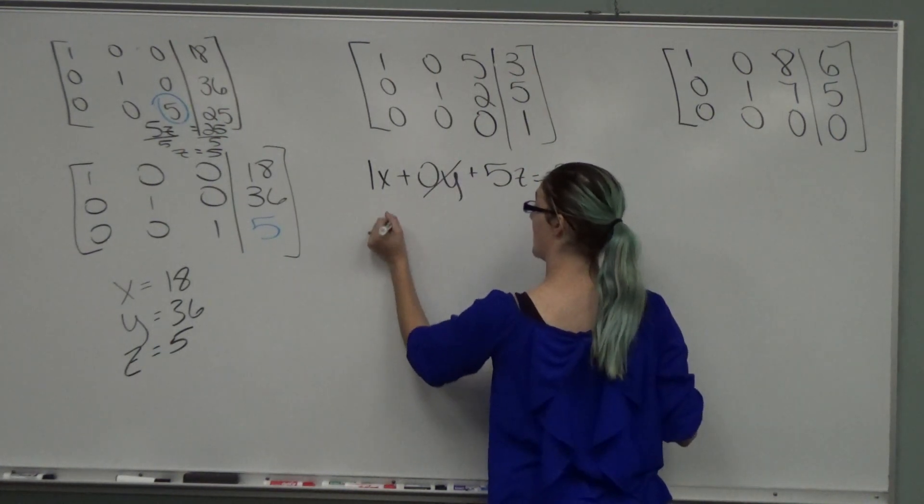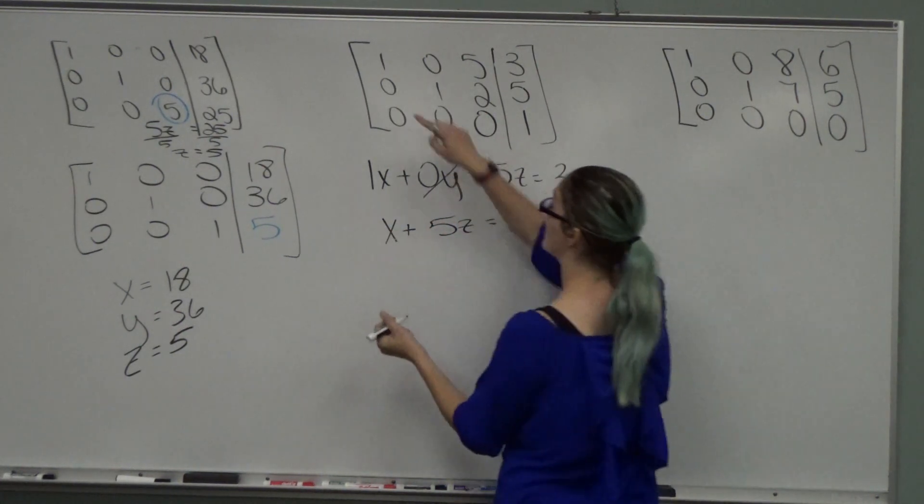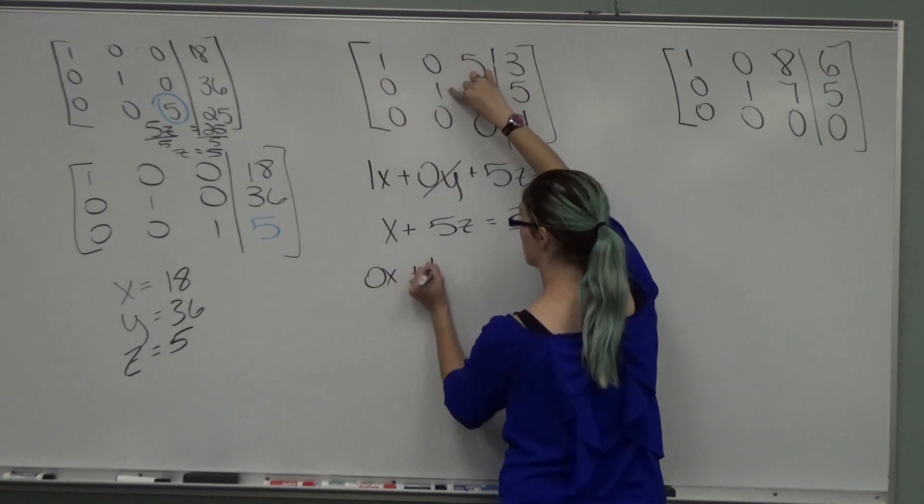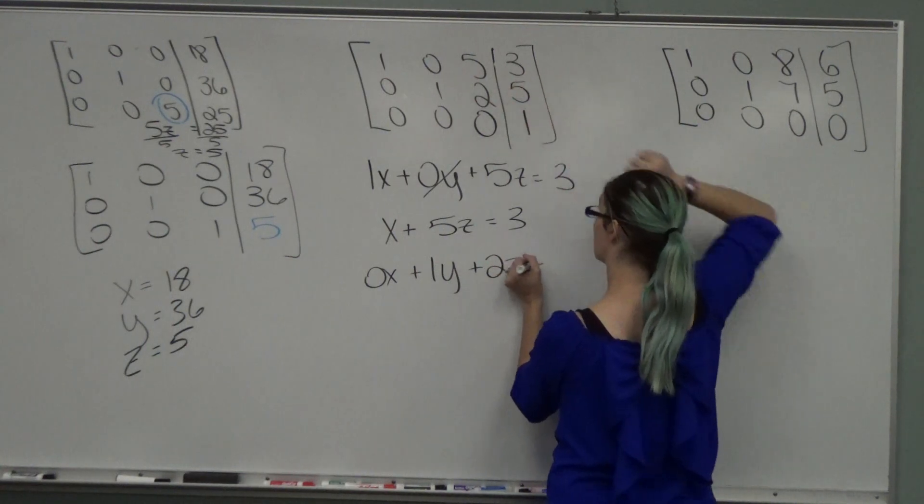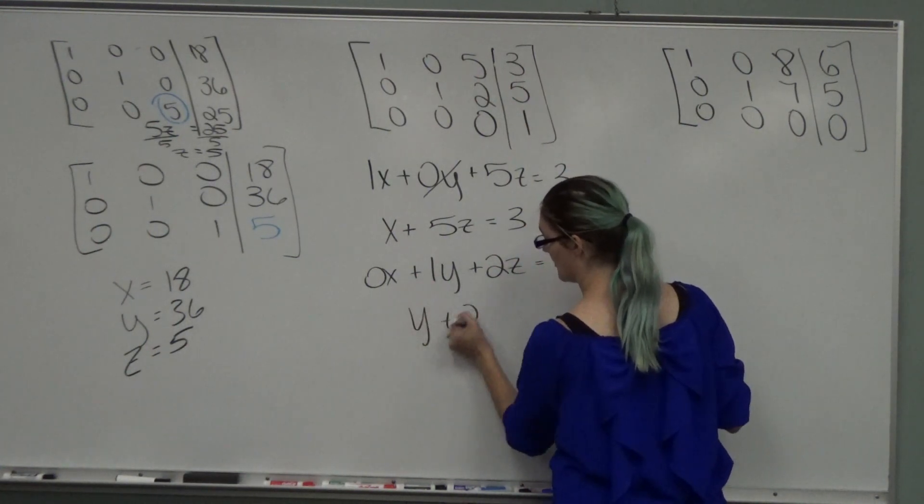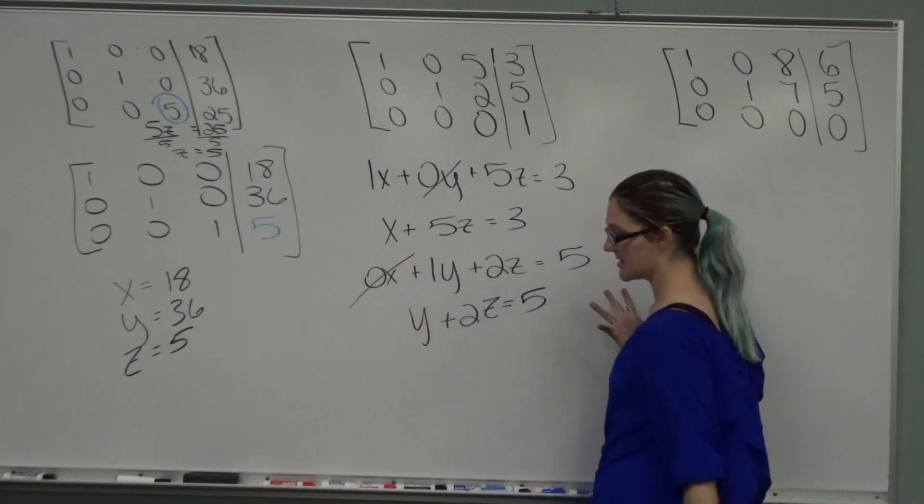So we have 1x plus 0y plus 5z equals 3. Basically, x plus 5z equals 3. Second equation, I have 0x plus 1y plus 2z equals 5. Basically, y plus 2z equals 5. Right? 0x is 0.